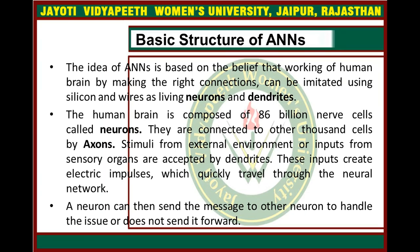Now, the basic structure of Artificial Neural Network. The idea behind ANN is totally based on the belief that the working of the human brain, by making the right connections, can be imitated using silicon and wires, living neurons and dendrites. This is also a biological term, similar to the clustering and genetic algorithm concepts, but here it is in terms of neurons. This neuron forms a network that is artificially created — hence we call it an Artificial Neural Network.